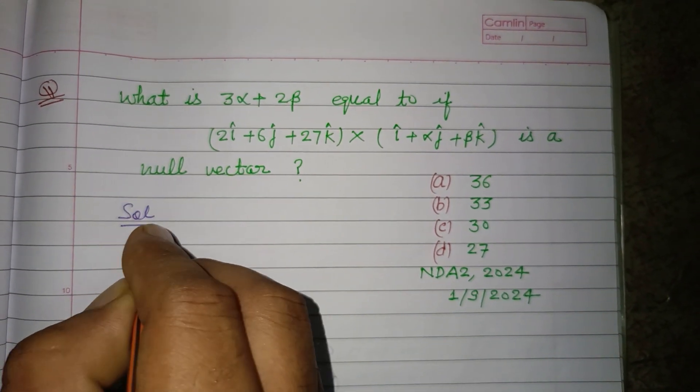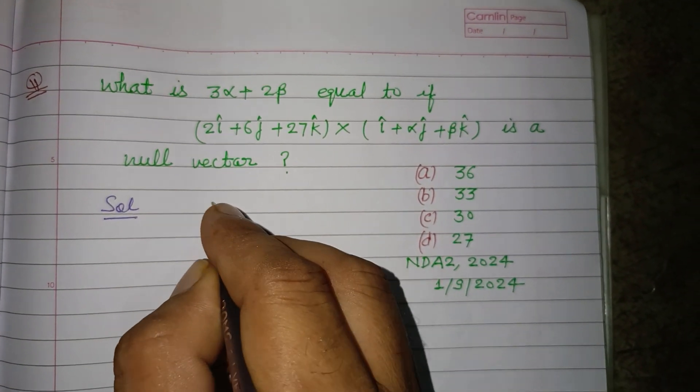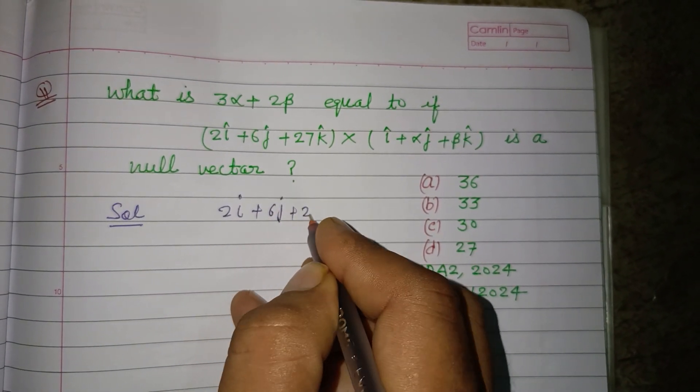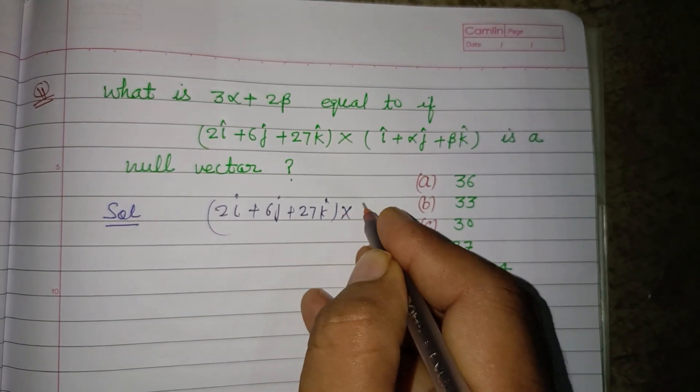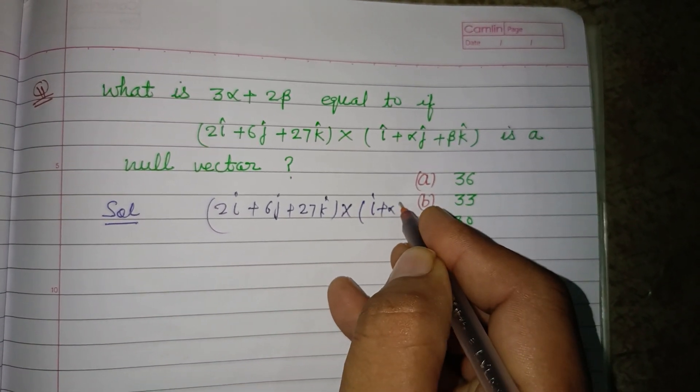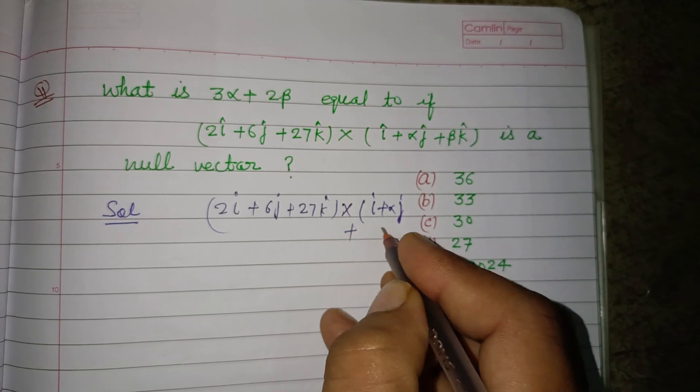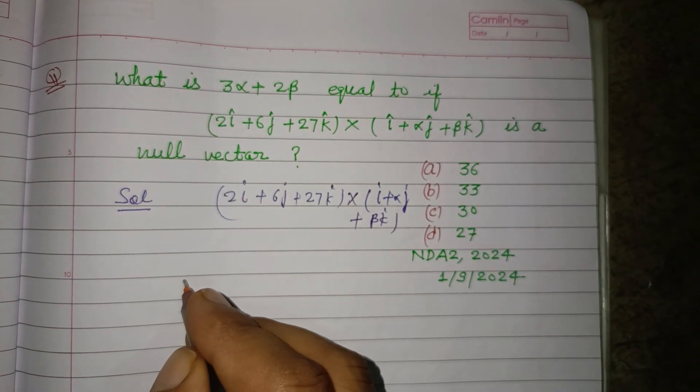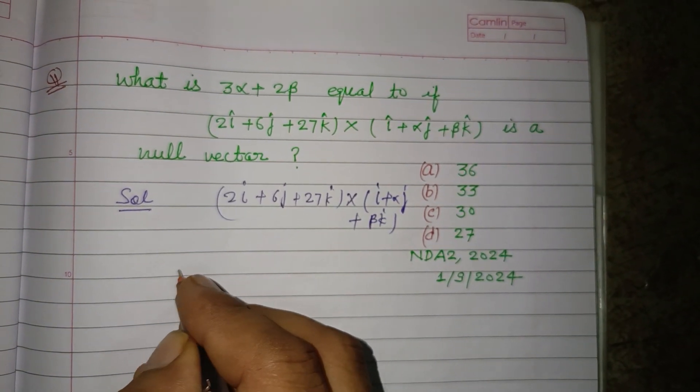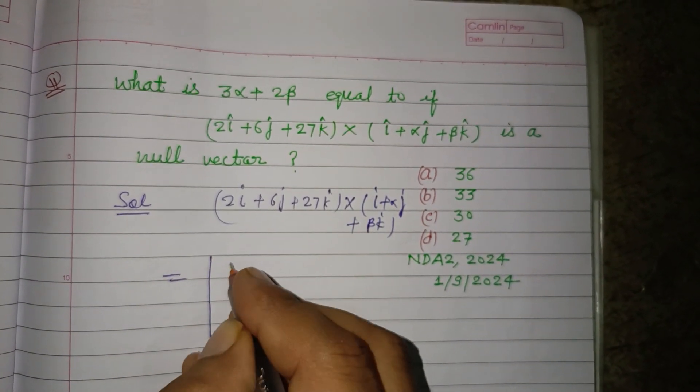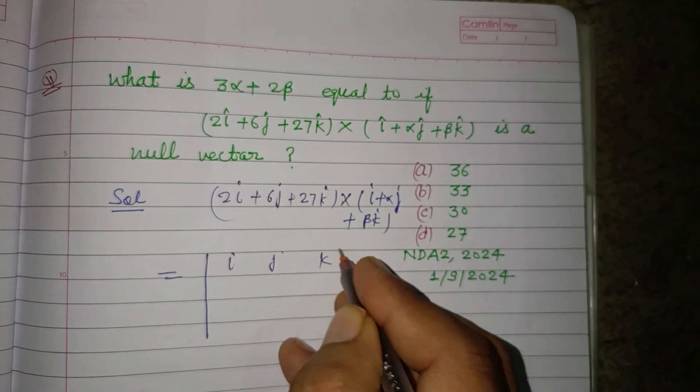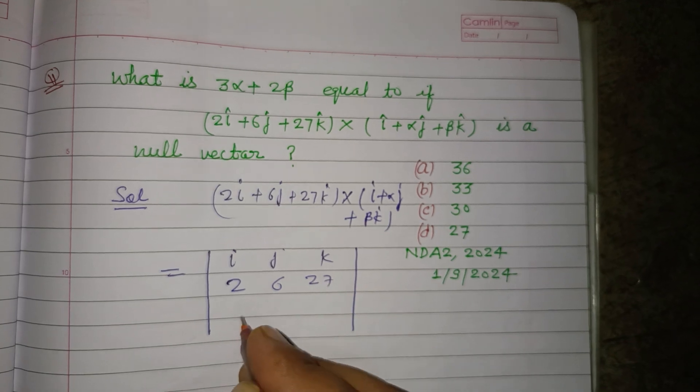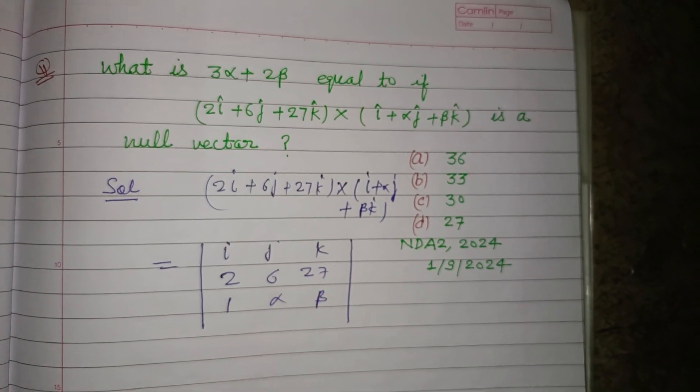So students, here (2î + 6ĵ + 27k̂) cross multiplied with (î + αĵ + βk̂) is a null vector. So first we multiply this. We set up the determinant with i j k in the first row, 2 6 27 in the second row, and 1 alpha beta in the third row.